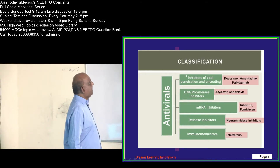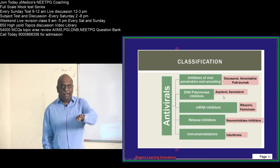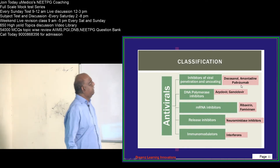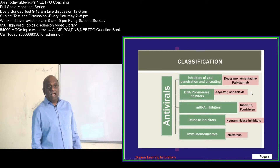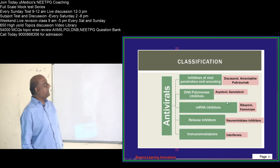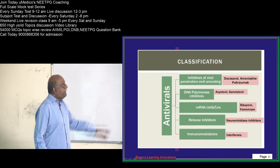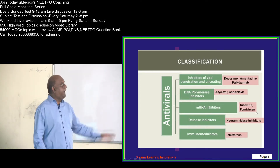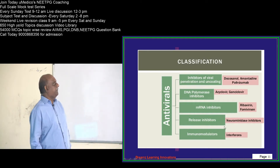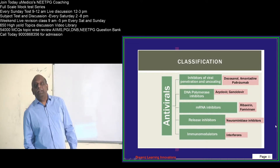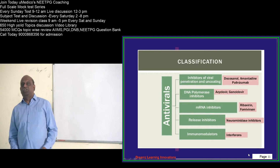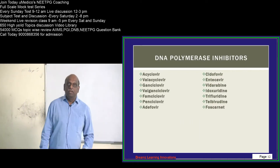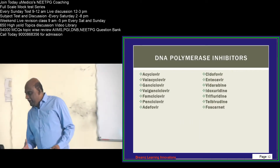Antiviral agents can be broadly classified as: inhibitors of viral penetration and uncoating (e.g., amantadine, palivizumab, docosanol); DNA polymerase inhibitors like acyclovir and gancyclovir; mRNA inhibitors like ribavirin; release inhibitors like neuraminidase inhibitors; and immunomodulators like interferons.